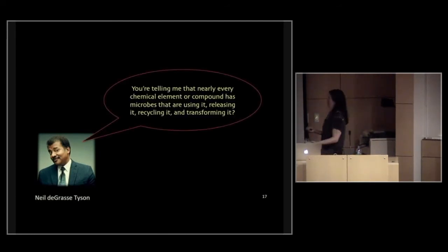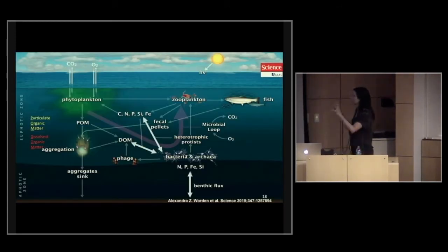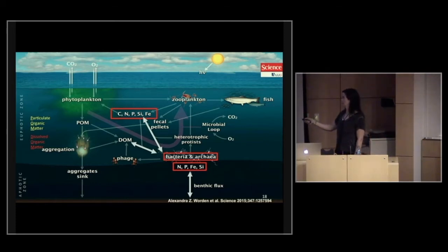It's Neil again. Neil's a good friend. I can't do his deep voice. You're telling me that nearly every chemical element or compound has microbes that are using it and releasing it, recycling and transforming it? I answer, of course, yes, Neil. In fact, this is what makes them so important in the entire food web. If we look at this food web, it's relatively sophisticated. But something to focus on here is that bacteria and archaea, these microbes, are kind of in the center of the entire web. The important part is that we see that there's several arrows that are double-headed. That means it's kind of a bi-directional pathway. These bacteria, for example, are breaking down dissolved organic matter. They're also changing the direction or the flux of nitrogen, phosphate, iron, and silica to the sediment floors. They're also contributing carbon, nitrogen, phosphorus, silica, and iron to the dissolved fraction in the water. They're very important for creating this food web.